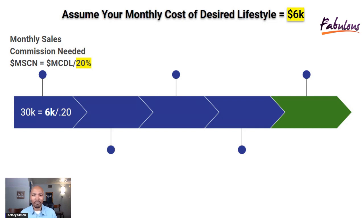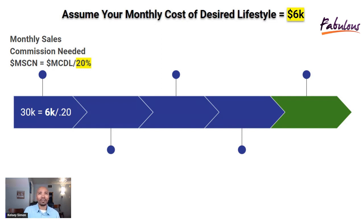So what we would do to discover the amount of sales commissions we need to earn every single month is we would take our cost of our desired lifestyle — in this case it's $6,000 — and divide it by 20%. The reason why it's 20% is because if we were using all of the sales commissions we earned, we wouldn't have any available to reinvest back into our business. So we only want to take 20% of our sales commissions to apply towards our desired lifestyle. That's why we're choosing 20%, but you can fluctuate that number if you'd like. $6,000 divided by 20% gives us $30,000, so you would have to earn $30,000 per month in order to have $6,000 in cash flow available to cover the cost of your desired lifestyle.